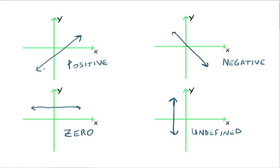So if the slope of your line is positive, your line goes up from left to right, also known as increasing. If your slope of your line is negative, then your line is going down from left to right, also known as decreasing. If your slope is zero, then you have a horizontal line, and if your slope is undefined, you have a vertical line.